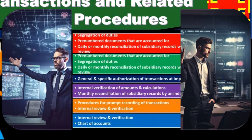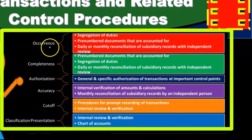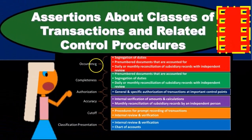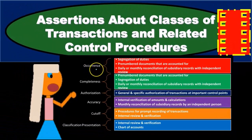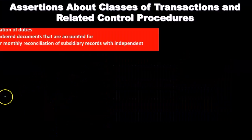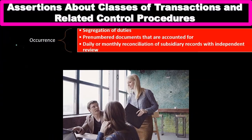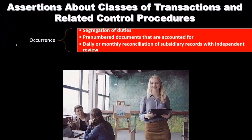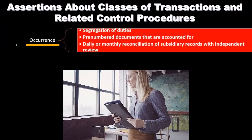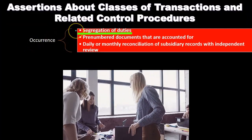Also, test questions will break out in this format, and students have a lot of trouble picking this up — they'll think about the types of control activities but possibly have difficulty tying those control activities out to the proper assertion. So you want to be able to pick that up. First, we have the assertion of occurrence. What type of control activities would be related to the assertion of occurrence? We have things like segregation of duties.